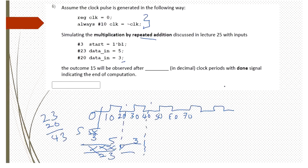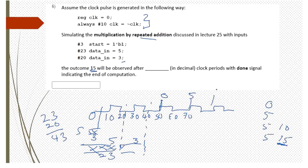The first value will be 0, then 5, then 10 (added with 5 again), then 15. The question asks after how many time units we observe 15, and how many clock periods. At 50 time units the output is 0, at 70 it is 5, then 10, then 15. At 110 time units we get 15, so the answer is 110 time units.